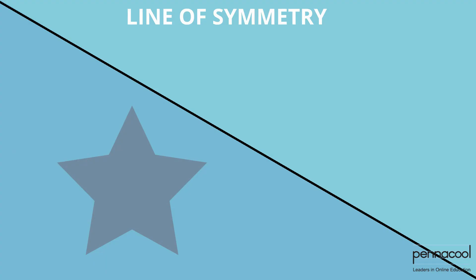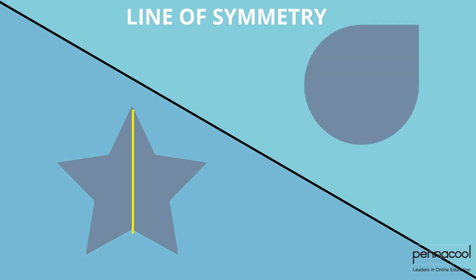The line of symmetry is an imaginary line that cuts a shape into identical halves. There are some lines that can cut a shape in half, but the pieces on either side of the line do not match up exactly.